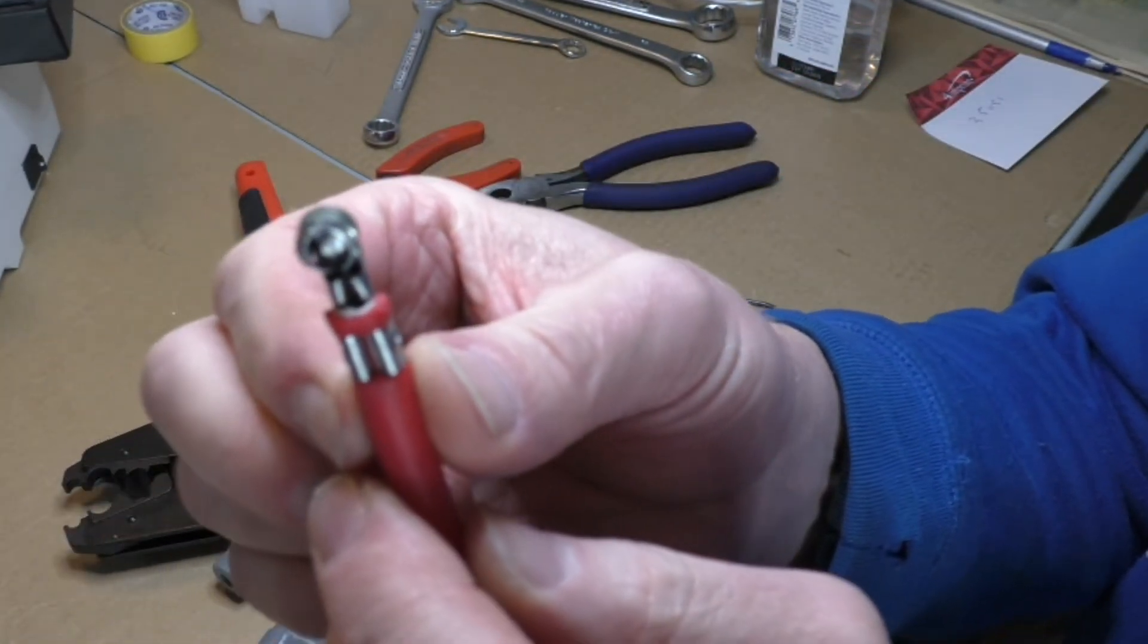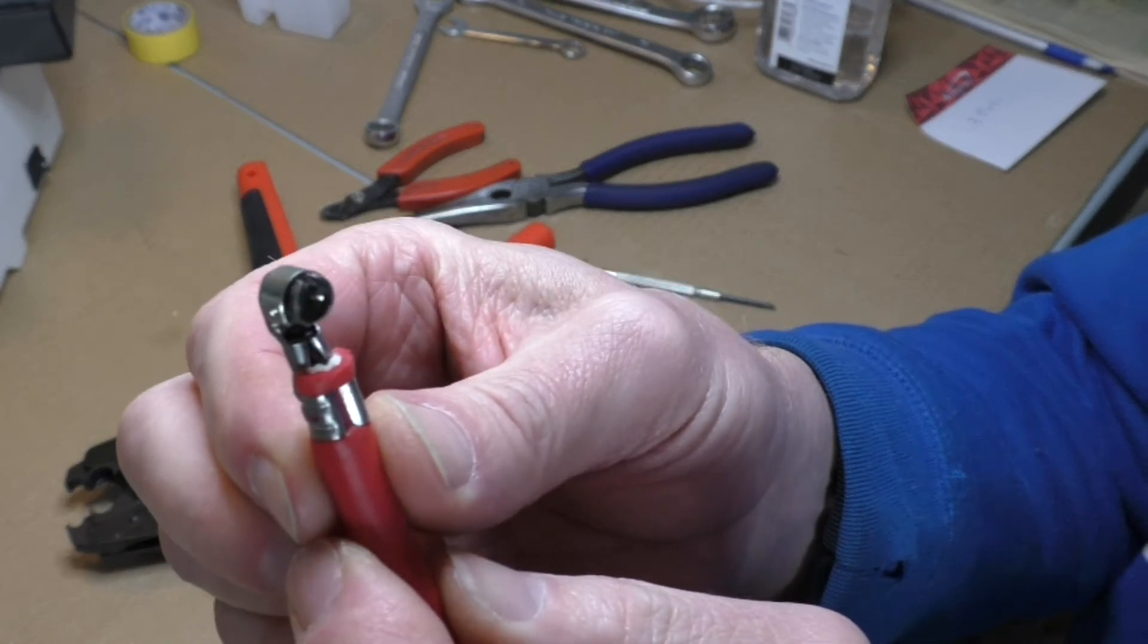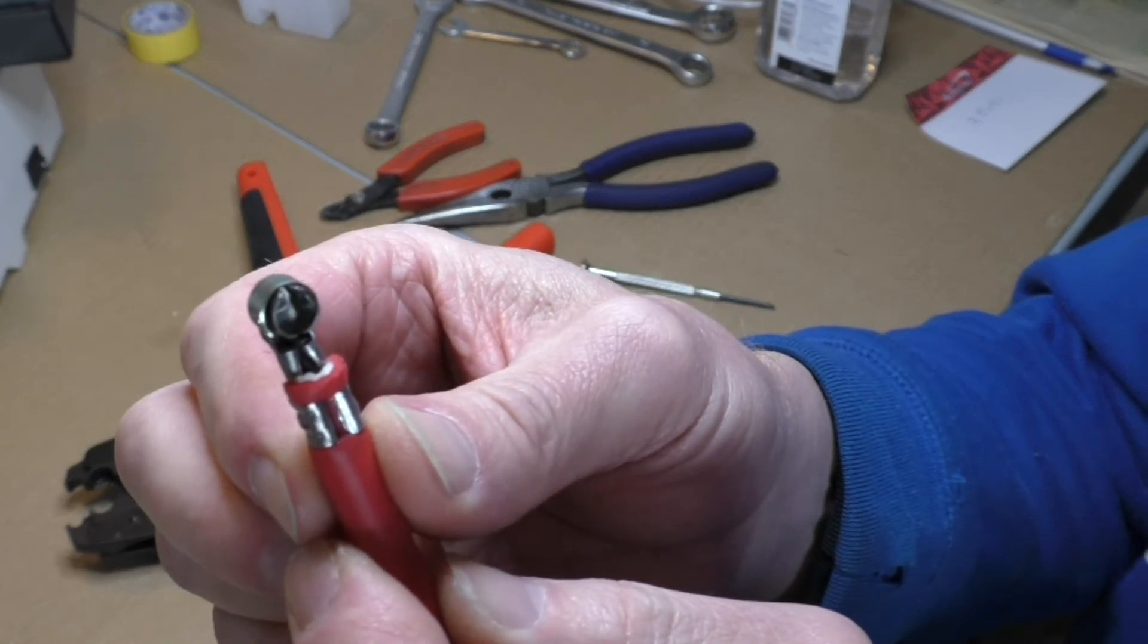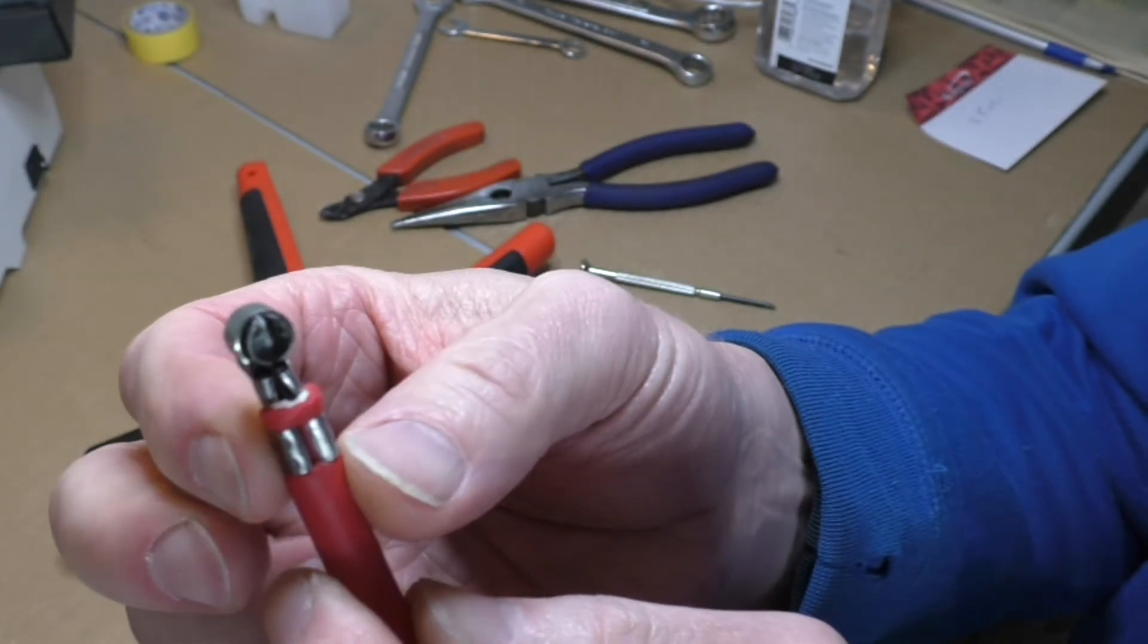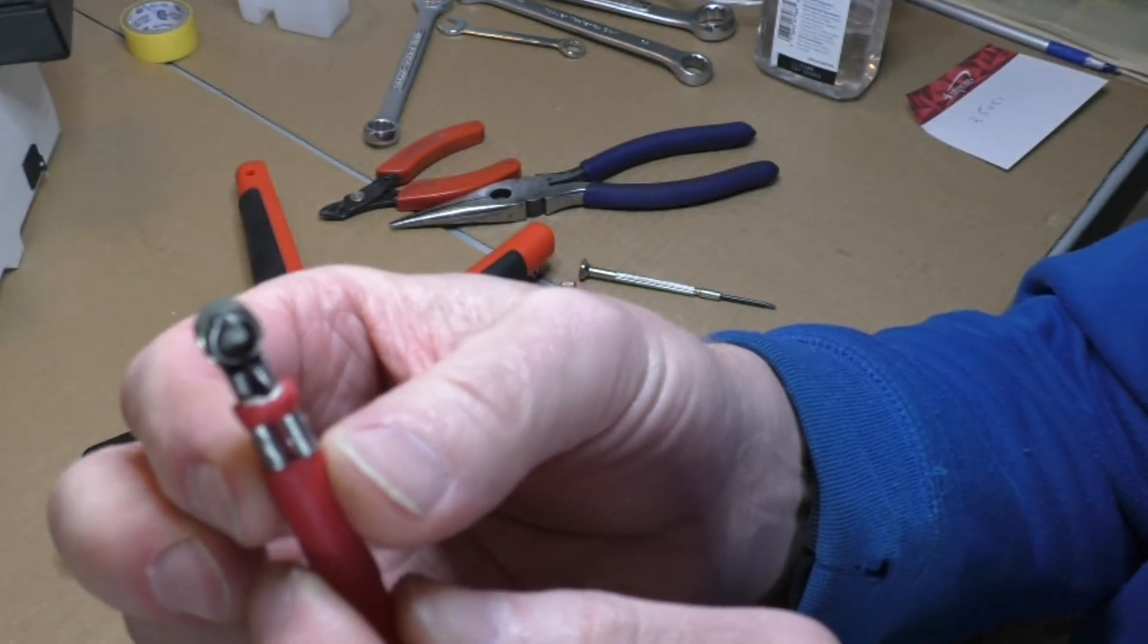And hopefully you can see there. It's captured the conductor down inside the front wings here. That's all there is to it for the terminal crimping.